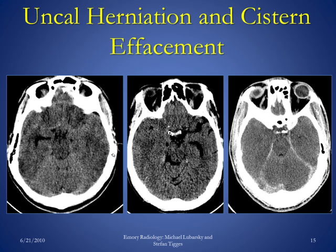On the image in the middle, we can see left-sided uncal herniation, where the right-sided quadrigeminal plate cistern is much bigger than the one on the left, indicating that the left-sided uncus has herniated onto the brain stem and causing mass effect on it. Additionally, on the image on the left, we can see an entrapped temporal horn of the left lateral ventricle. Finally, on the image on the right, we can see loss of gray-white matter differentiation consistent with cerebral edema, and again loss of the basilar cisterns, where there is contact between the temporal lobes and the brain stem indicating mass effect.